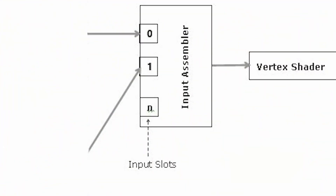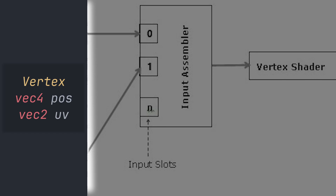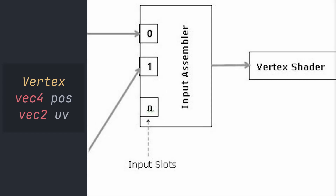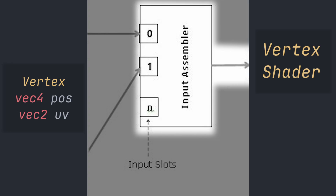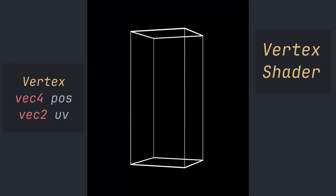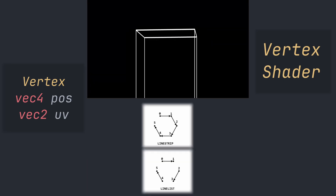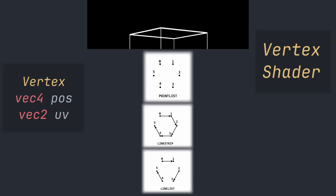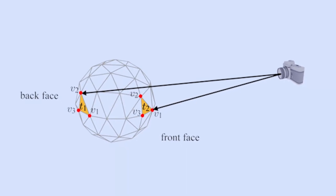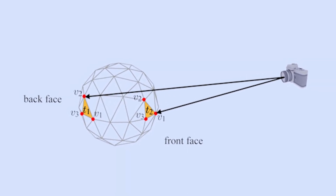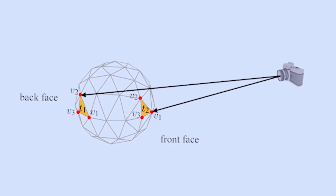Let's start with the input assembler. The input assembler groups together vertex data with a certain input and output into primitives, which it then forwards to the vertex shader. It groups vertices into different geometric types such as lines, strips, points, and triangles. This step is crucial — for example, with triangles, to know whether you're rendering a back face or a front face. Finally, it associates the assembled vertex data with the semantics defined in your vertex shader.